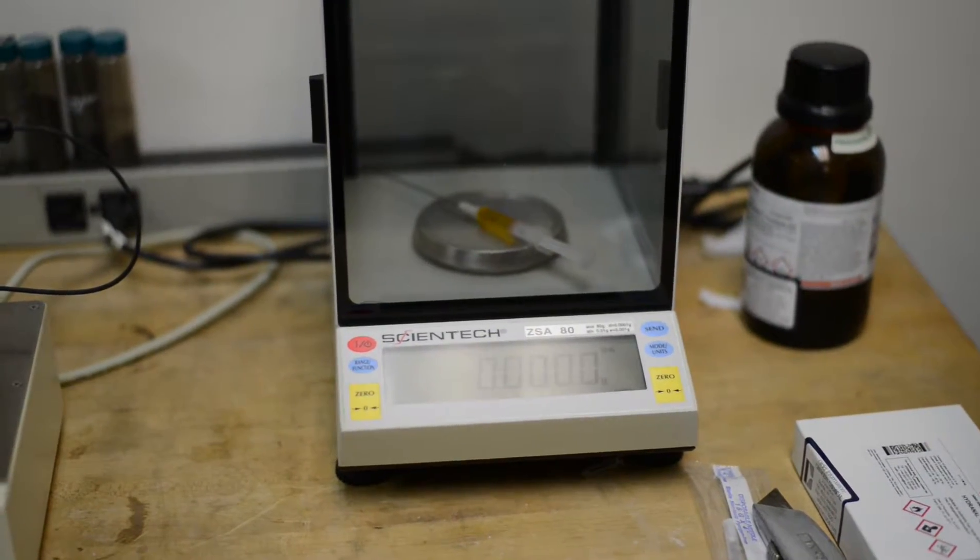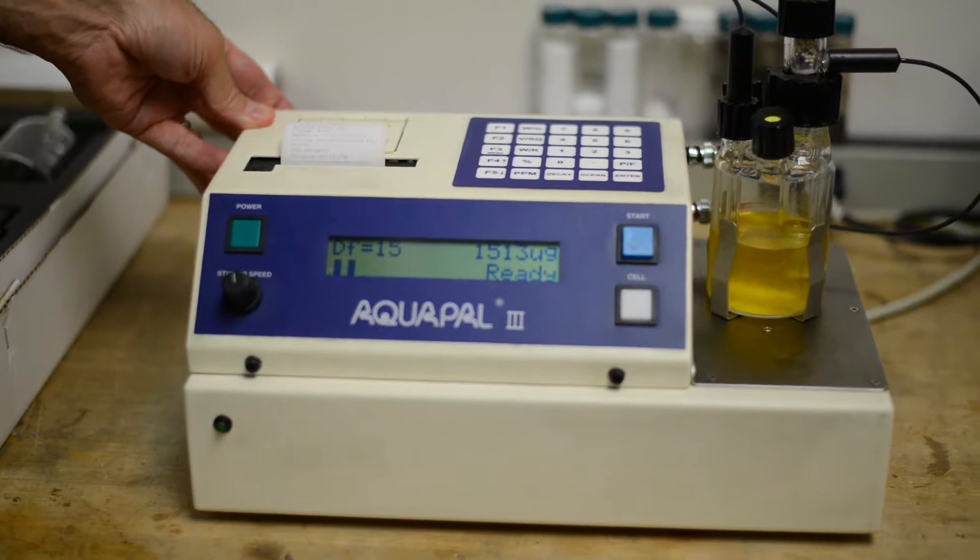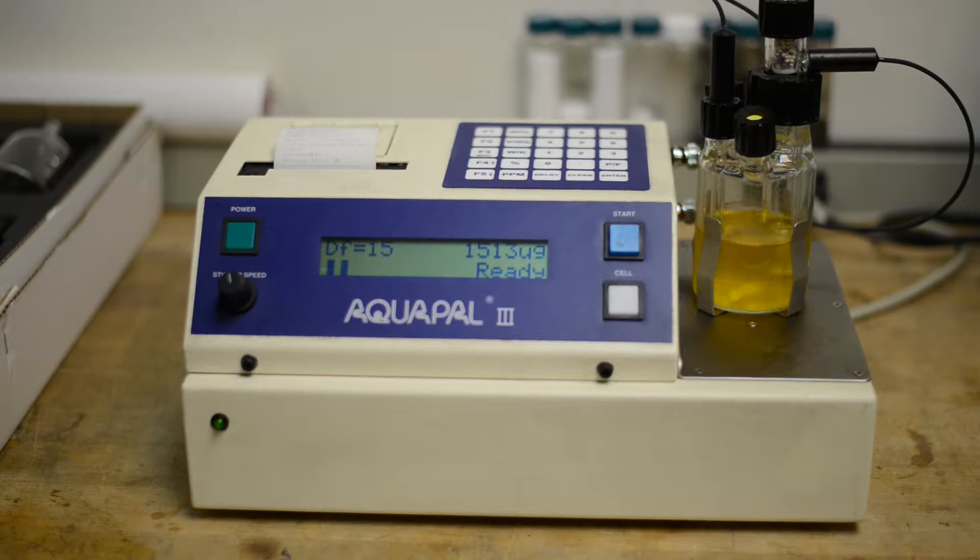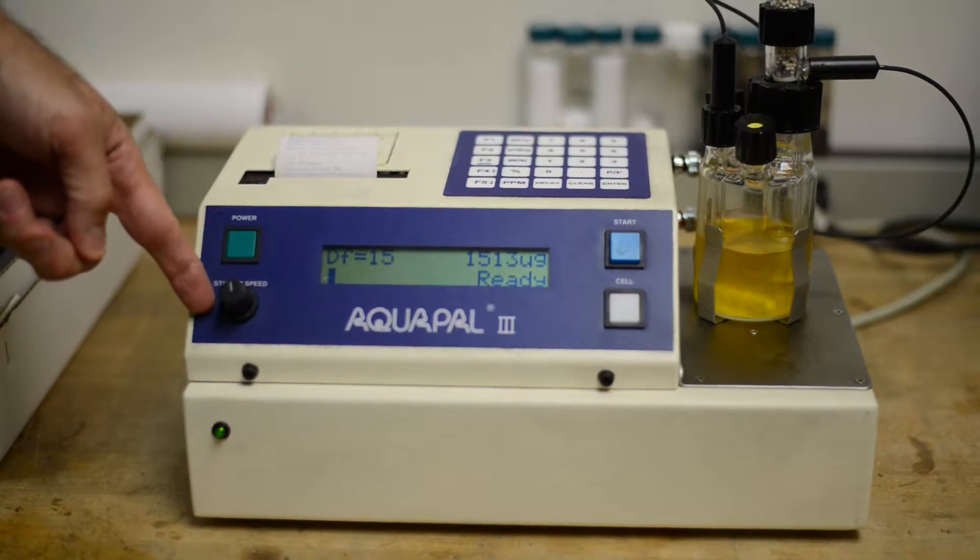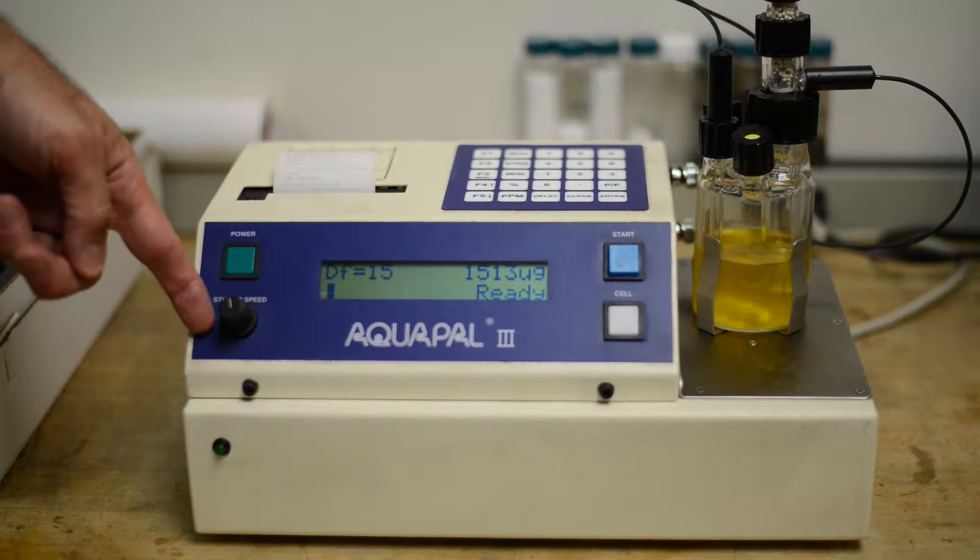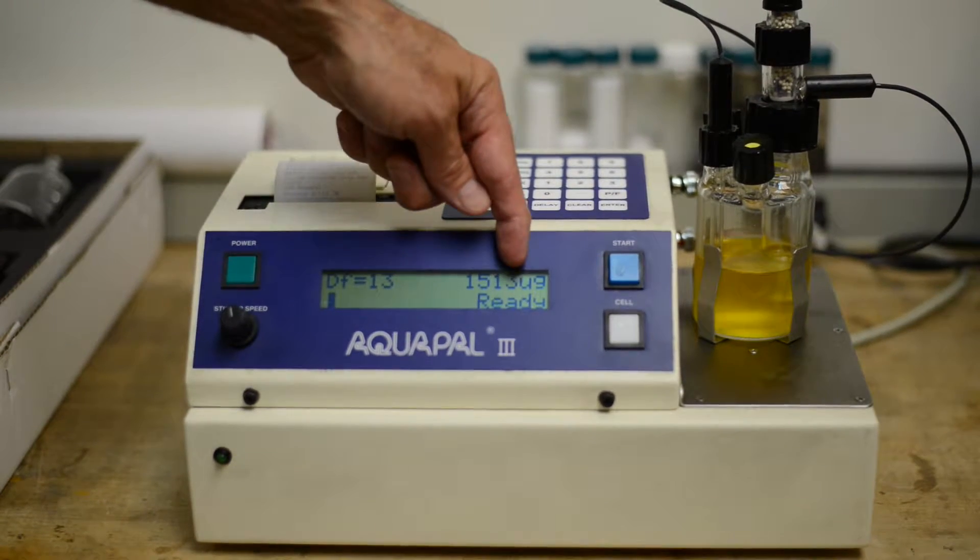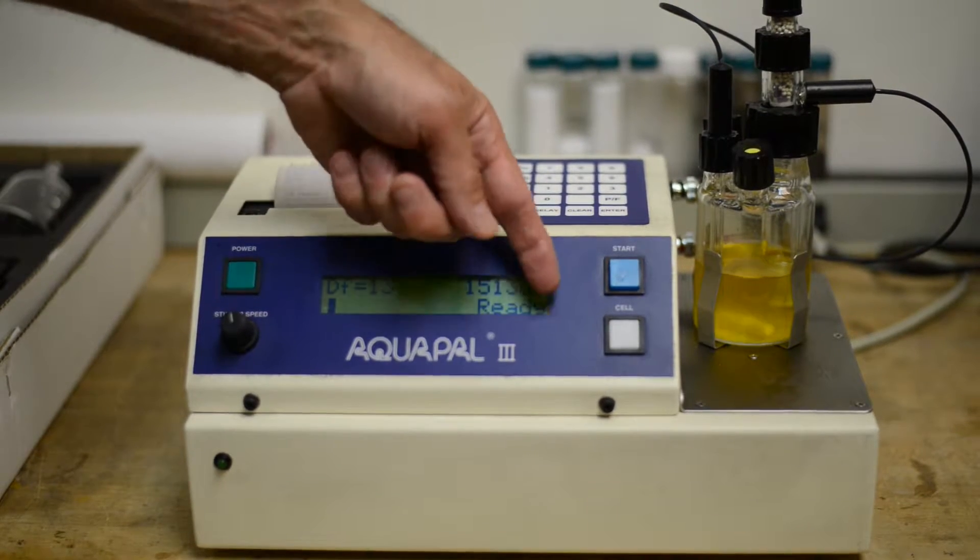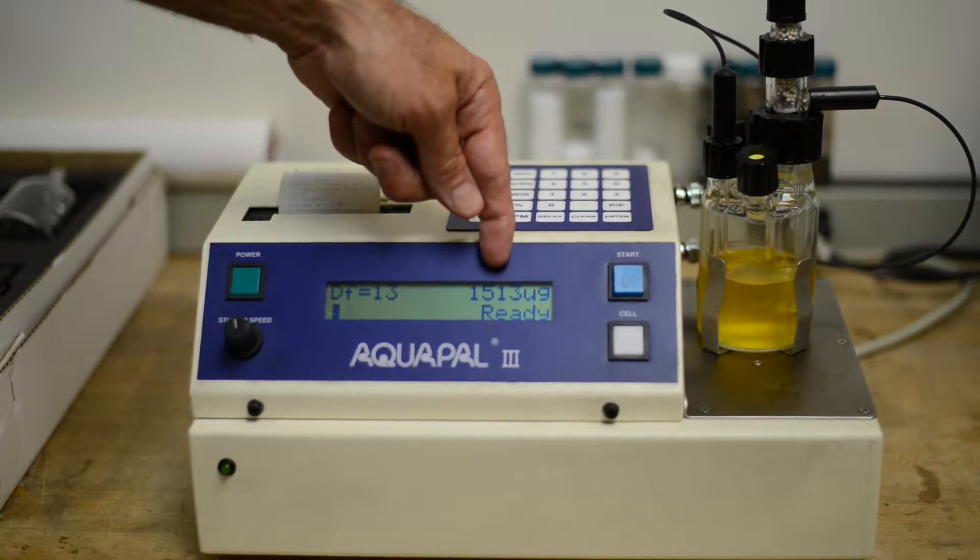So here we have the Aquapel 3. It's set up, right now it's running a dual reagent. This is a coulometric Carl Fischer titrator. It has a power button, it has a stir bar speed dial. It's got the readout, it gives us our drift, it gives us our counting moisture in micrograms, and it gives us our ready mode. We have our cell button, which we turn on when we want the pretitration to begin. And then, of course, we have our start button for starting the test.